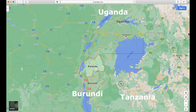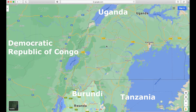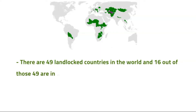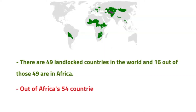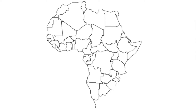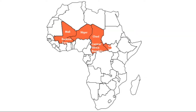There are 49 landlocked countries in the world, and 16 out of those 49 are in Africa. Out of Africa's 54 countries, 16 of them are landlocked. These countries are completely surrounded by at least one other country with no direct access to the sea. In alphabetical order, the landlocked countries in Africa are: